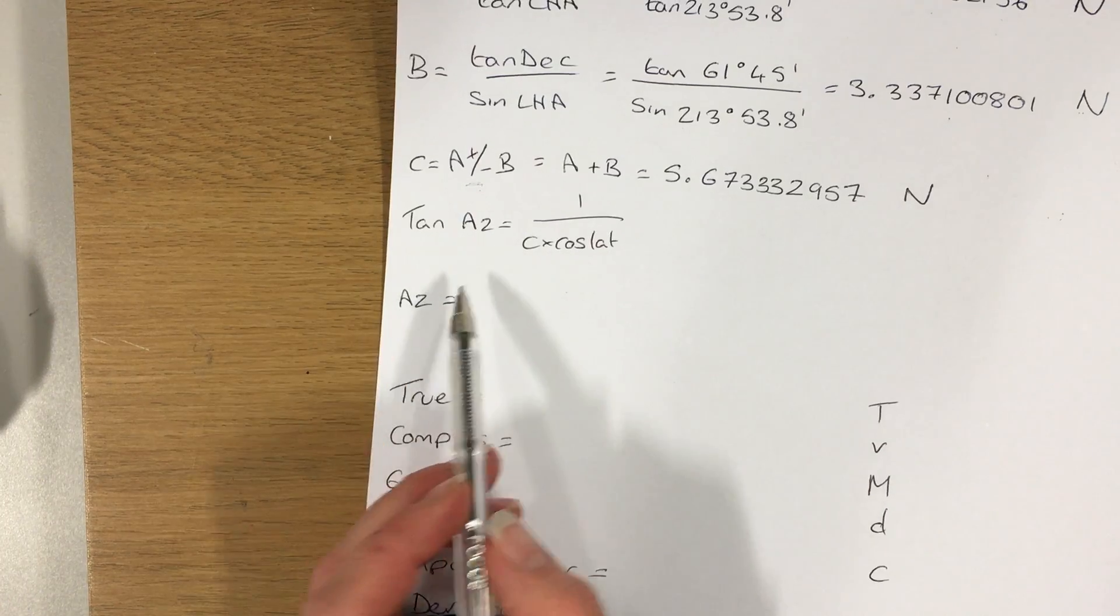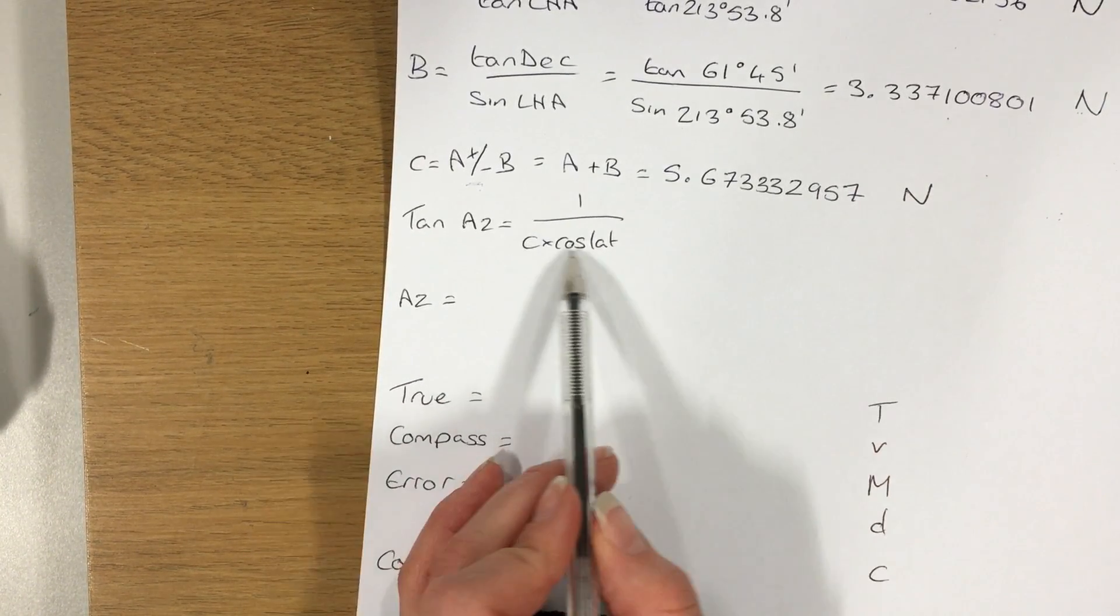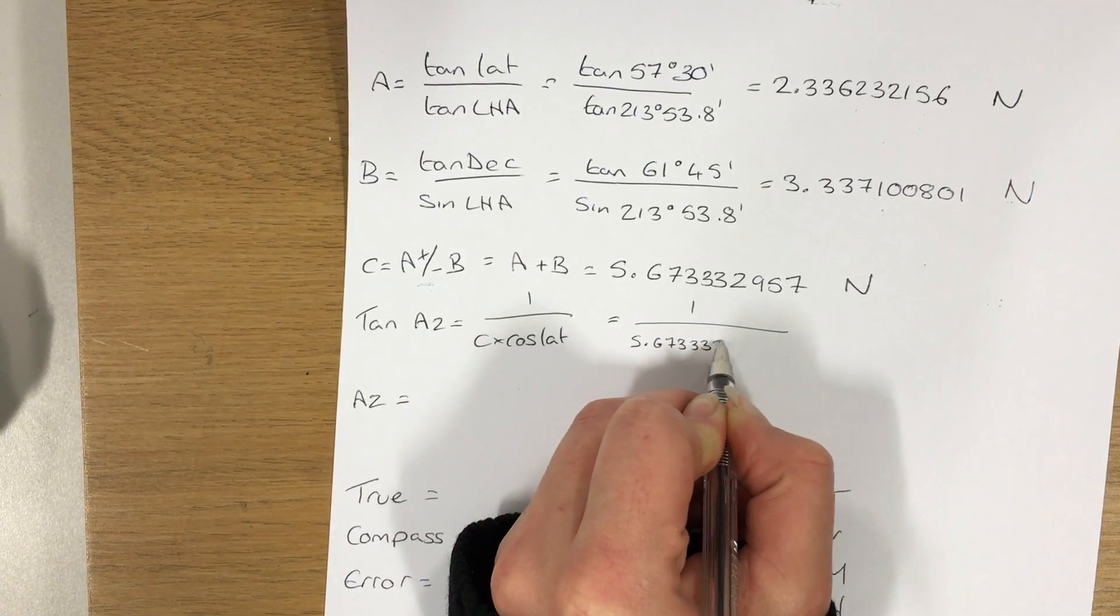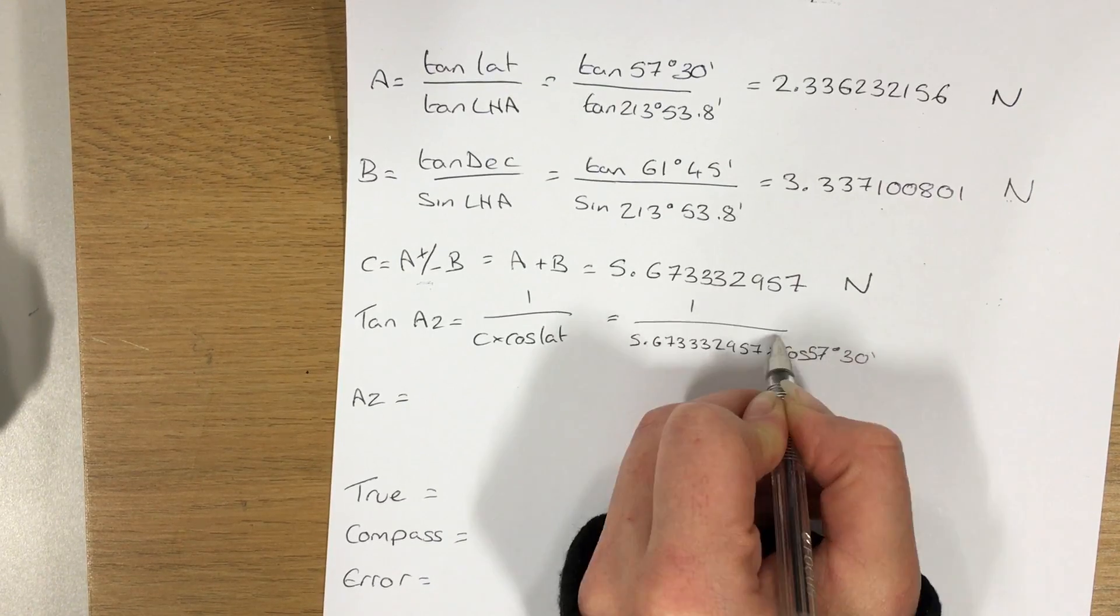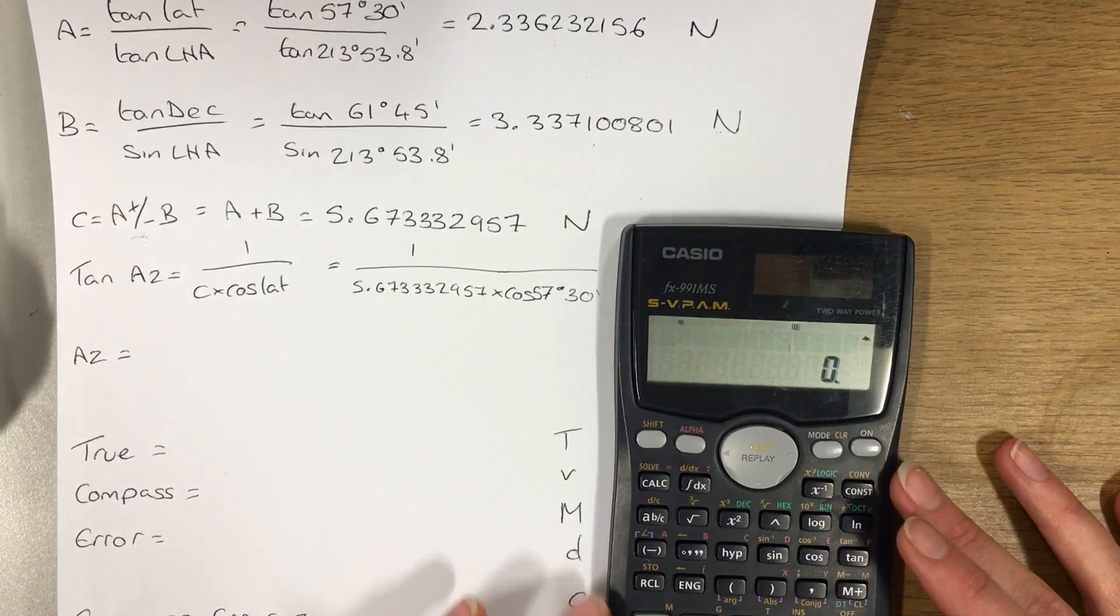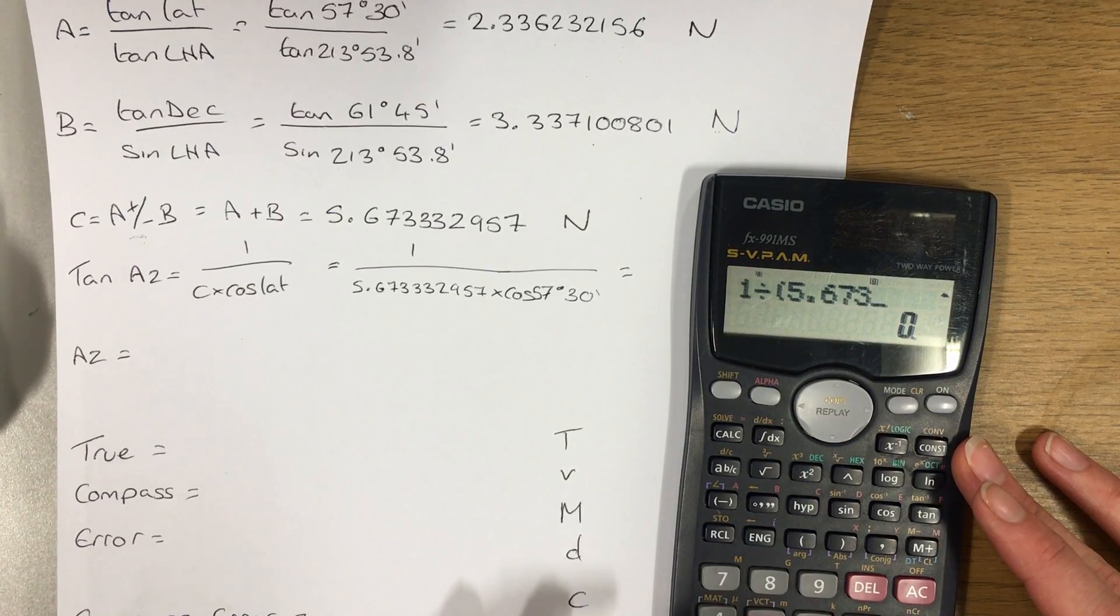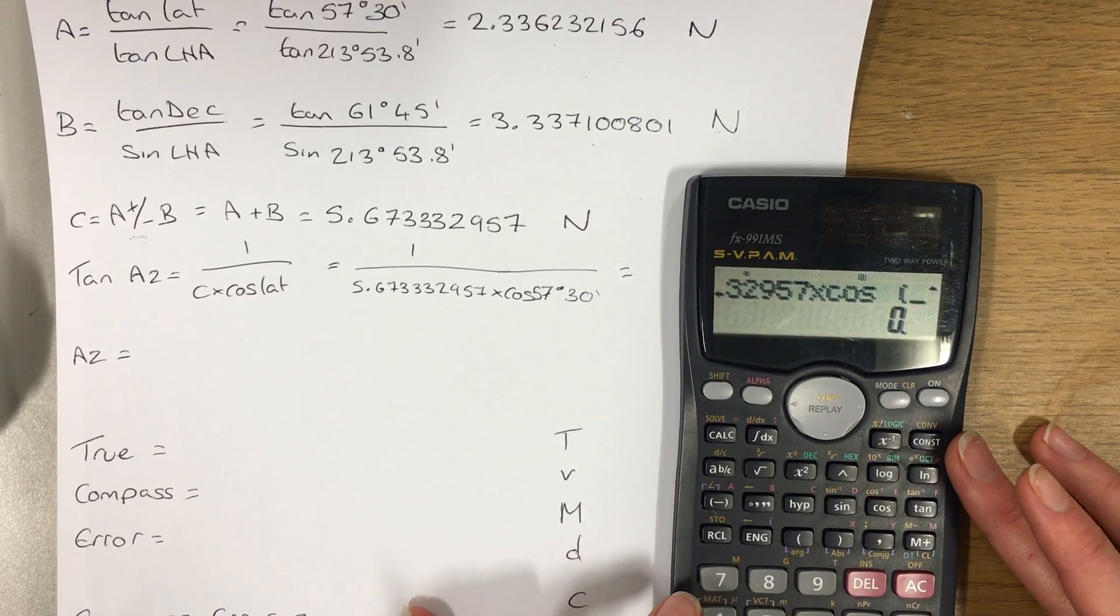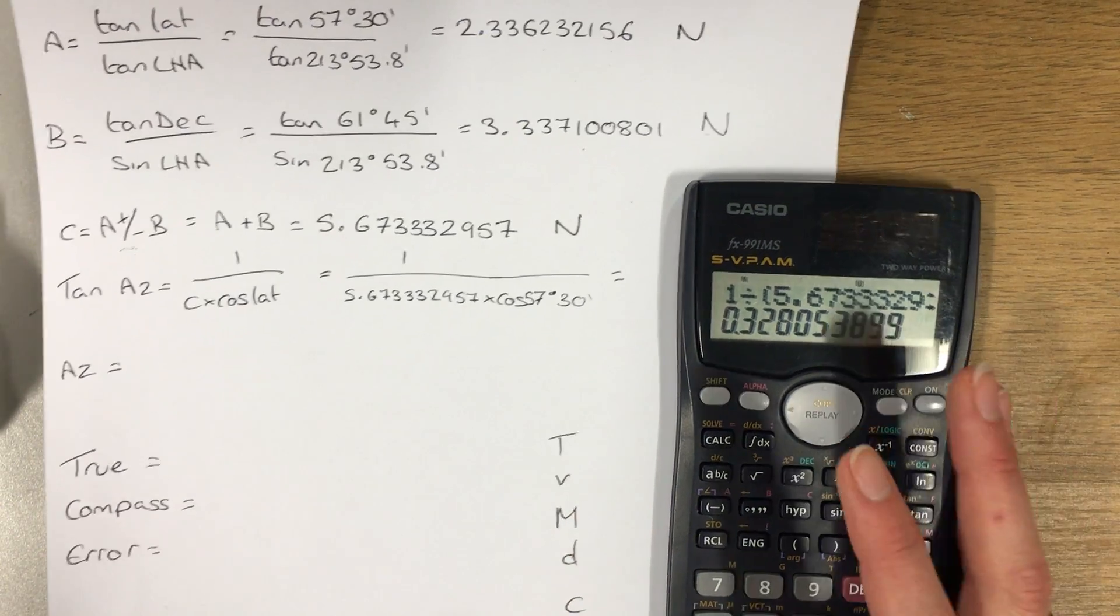I'm now going to use that C figure in order to find the tangent of my azimuth. So tan azimuth is equal to 1 divided by C multiplied by the cosine of the DR latitude. So I put that into my calculator. That gives me a value for the tan of the azimuth.